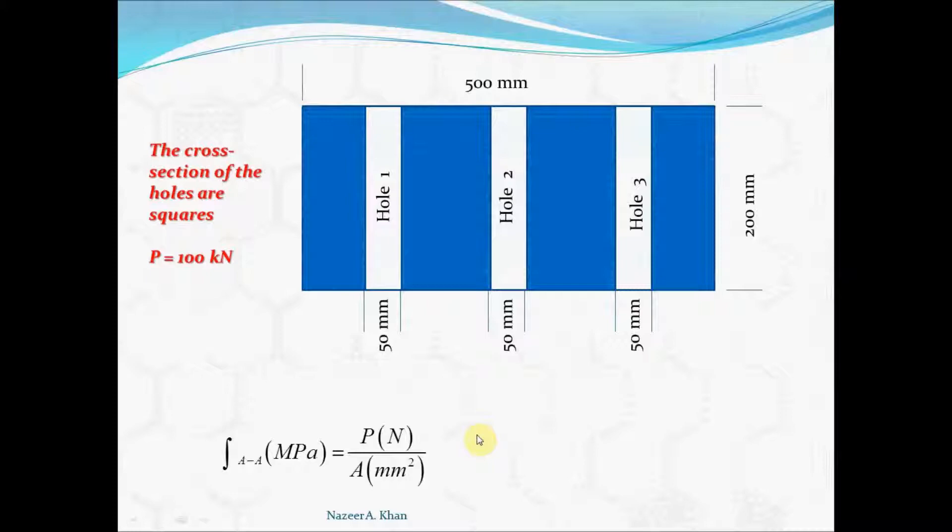When we look at the cross-section of the block, the top view of the cross-section, say we cut it with a hacksaw right in the middle, this is what we would see. We'd see the outer edges of the block and we would see the three holes. What we are trying to calculate at the mid-section is the blue cross-filled area or the shaded area here, the blue shaded area.